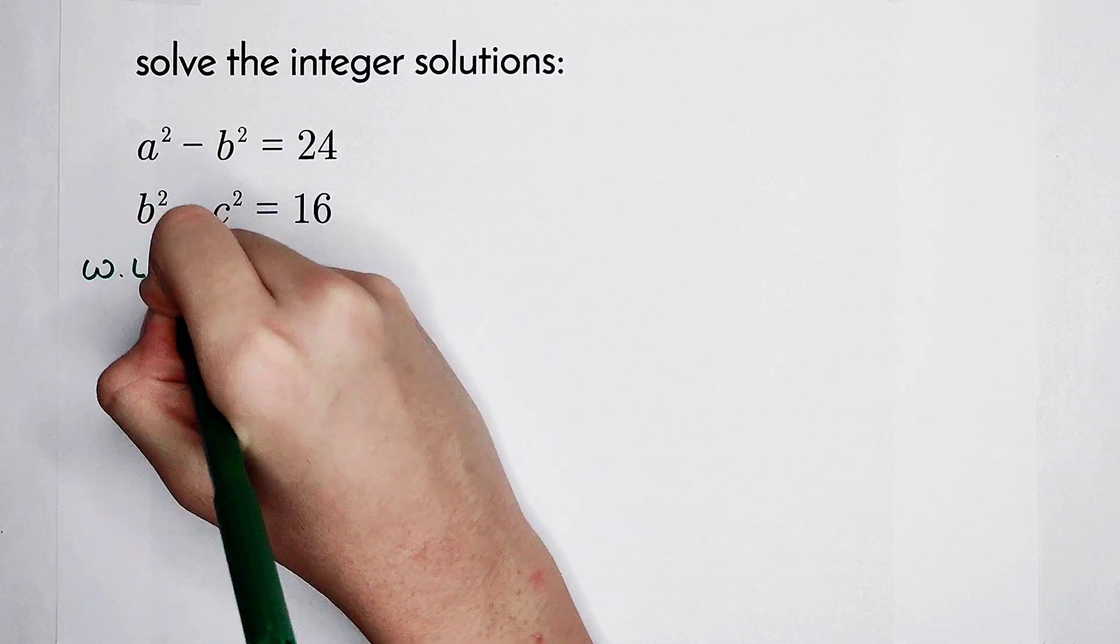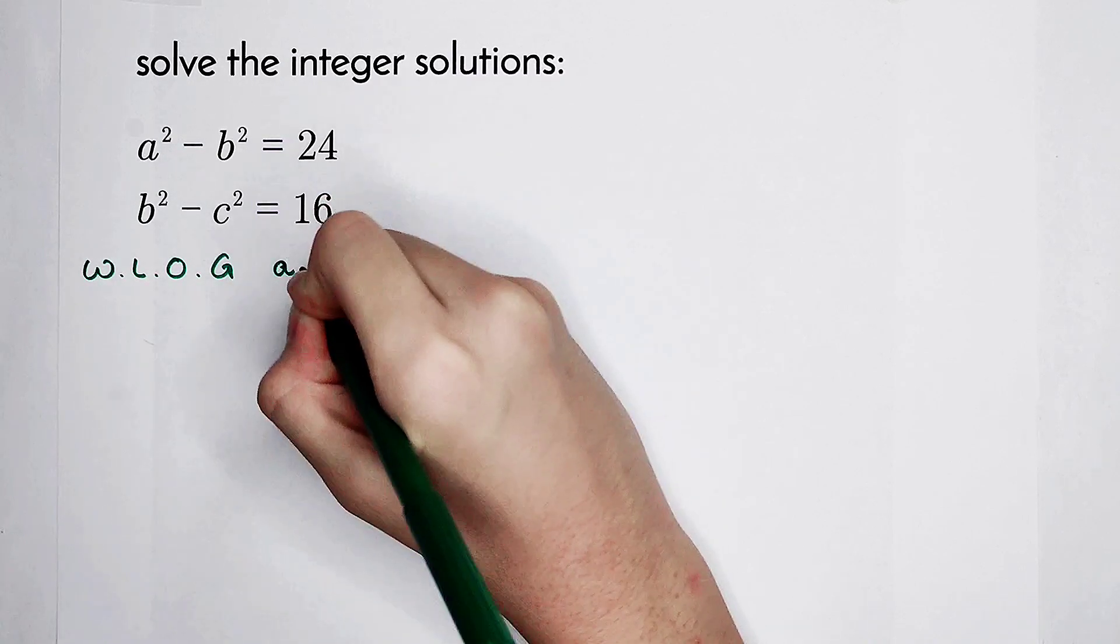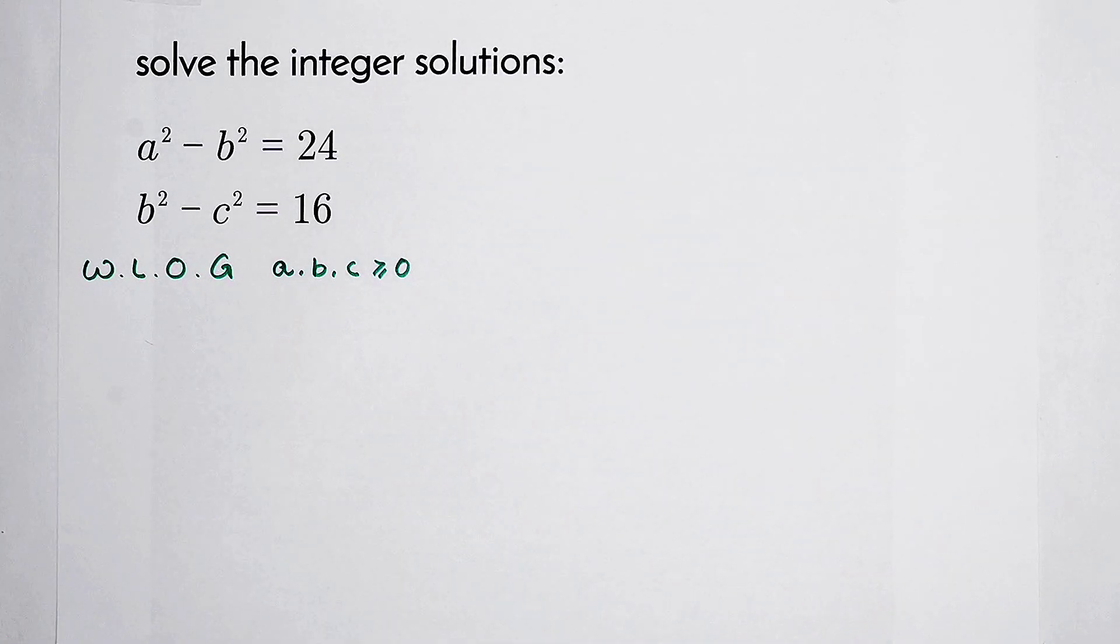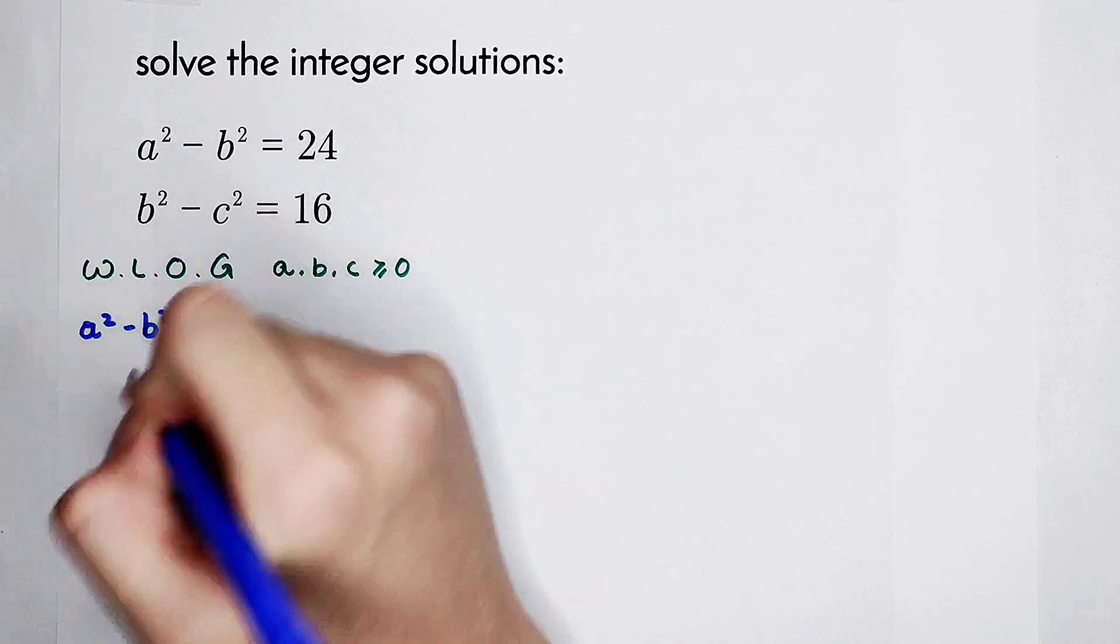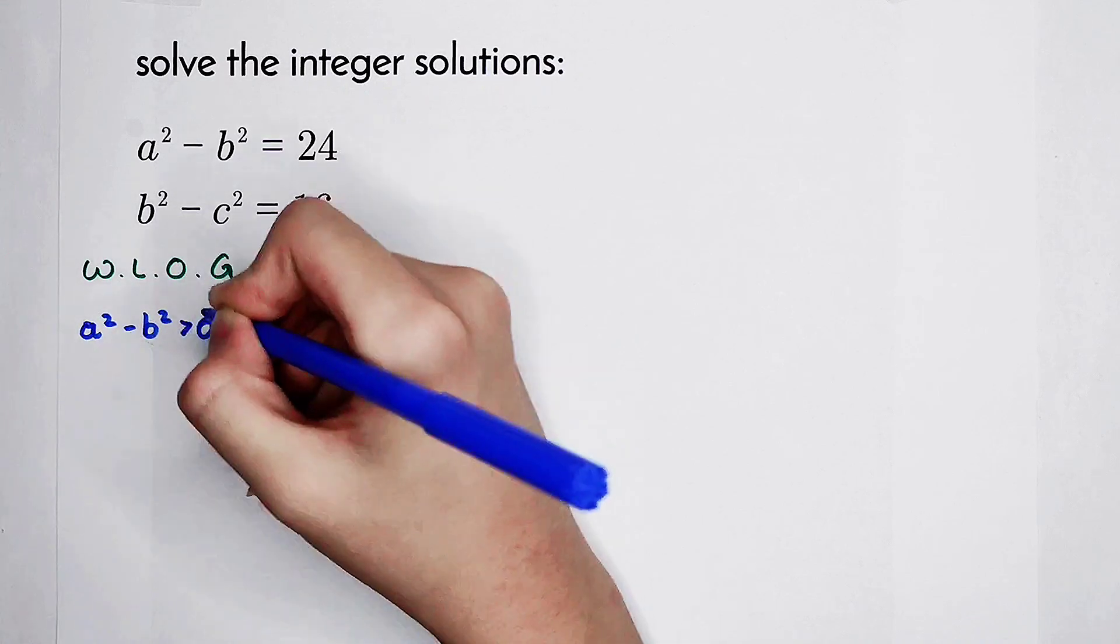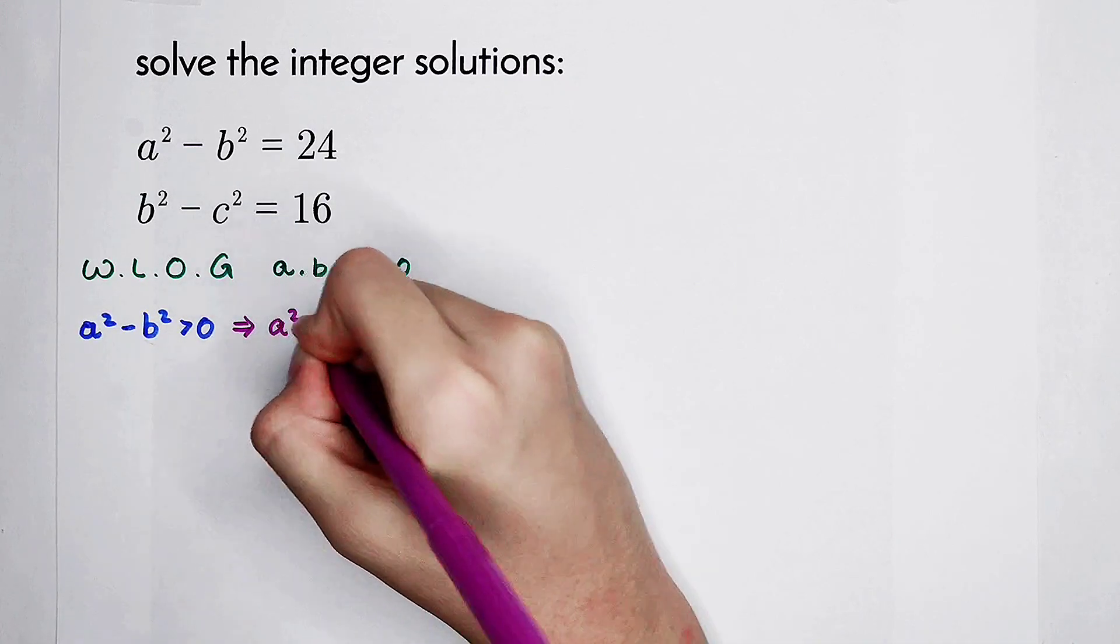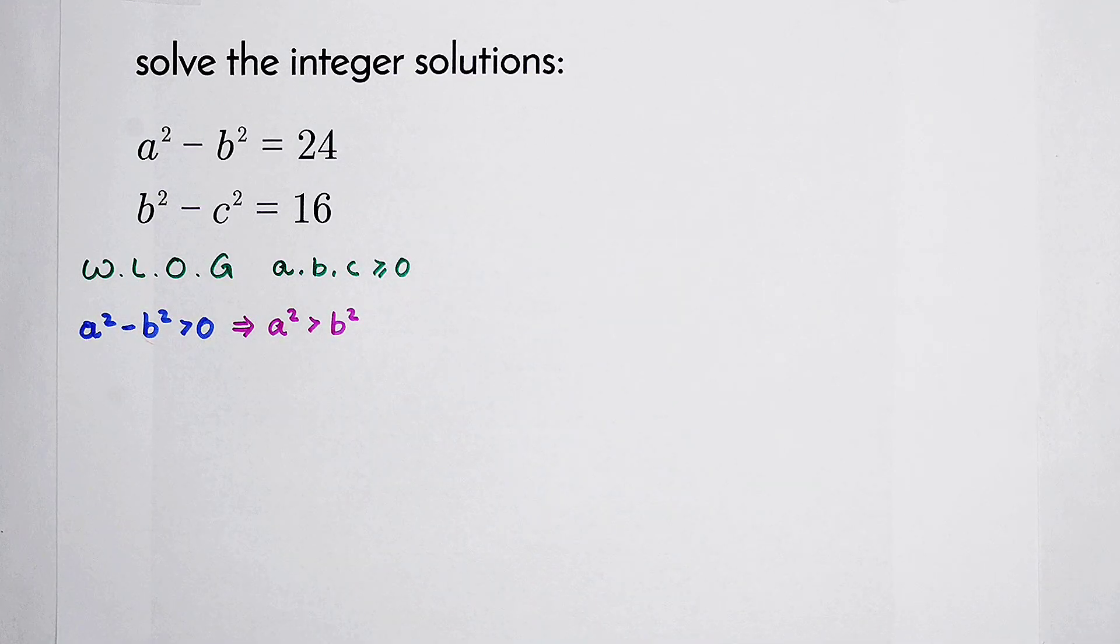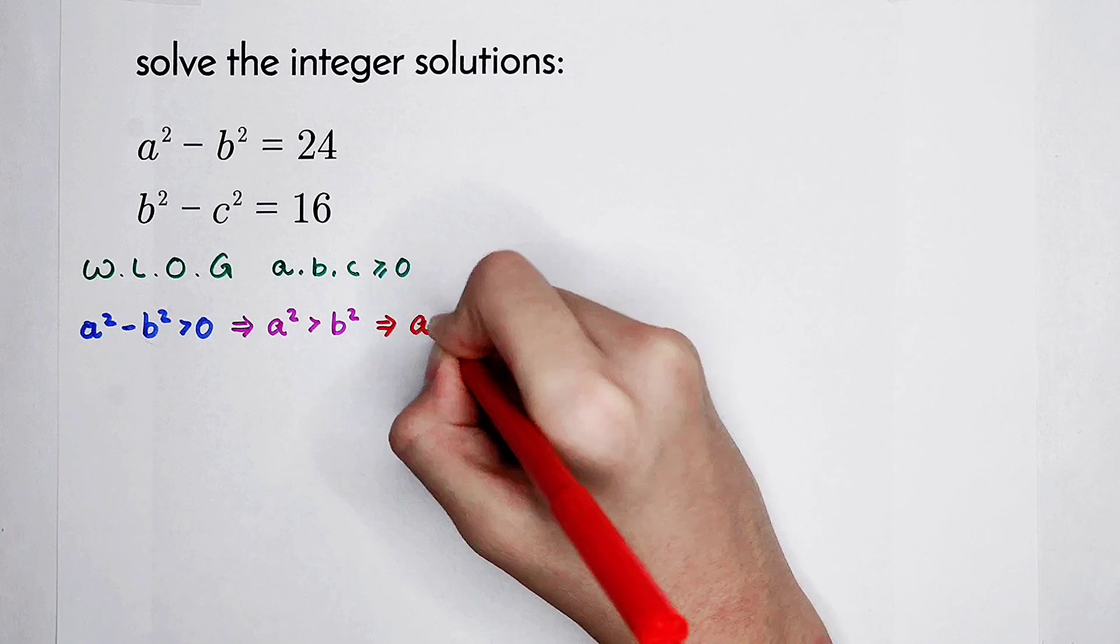Without loss of generality, we can firstly let a, b, and c be all non-negative. a squared minus b squared equals 24, and 24 is a positive integer greater than zero. So that means a squared is bigger than b squared. Since a, b, and c are all non-negative, we can get a is bigger than b.